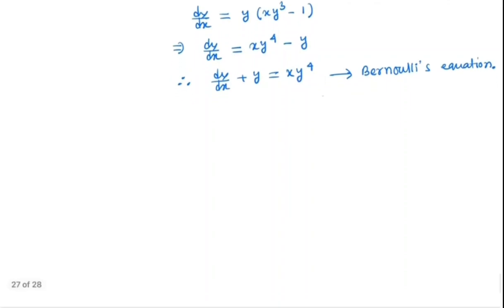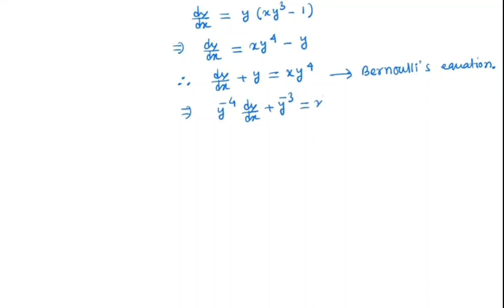Now let's try to solve this equation. Divide both sides by y to the power 4, so we get: y to the power minus 4 times dy/dx plus y to the power minus 3 is equal to x.